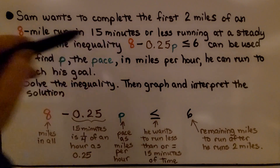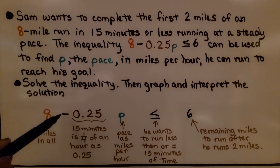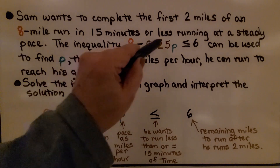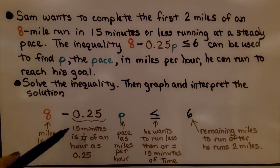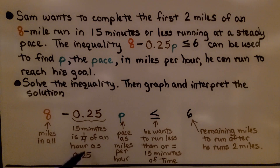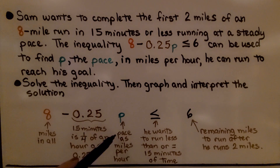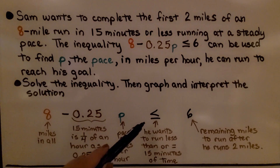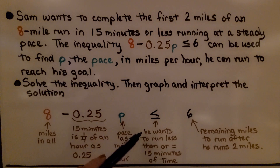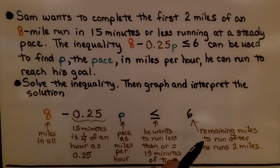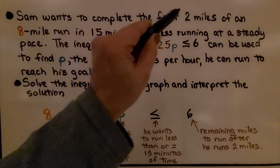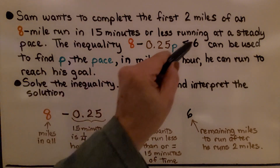In this inequality, 8 represents 8 total miles. The 0.25 comes from the fact that 15 minutes is one-fourth of an hour, written as 0.25. The variable p is the pace in miles per hour. We use less than or equal to because he wants to run 15 minutes or less, and 6 represents the remaining miles after completing the first 2 miles of the 8-mile run.